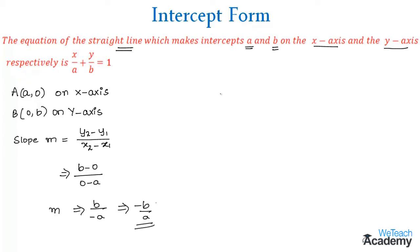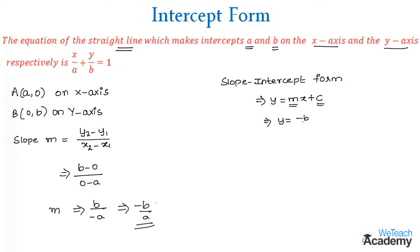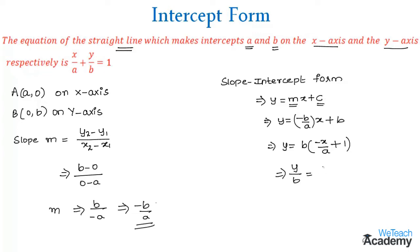Here let us use the slope-intercept form: y = mx + c. Substituting the slope and the y-intercept, we get y = (-b/a)x + b. Taking b as the common factor we get b(-x/a + 1), and transferring b to the left-hand side we get y/b = -x/a + 1.